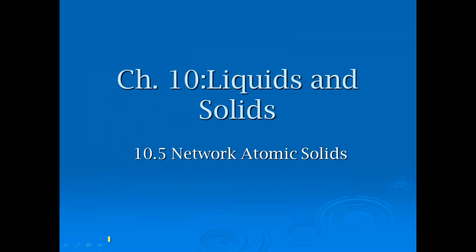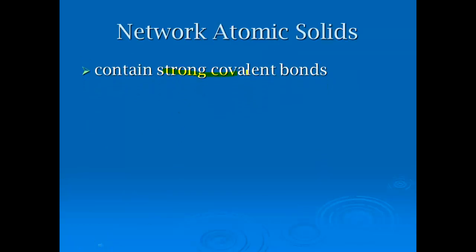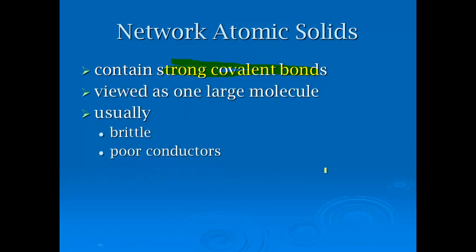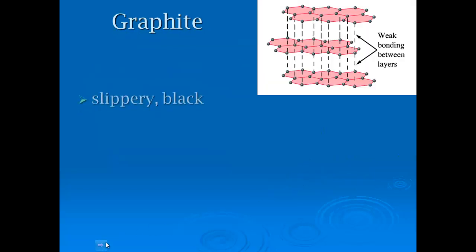Network atomic solids. I know these are kind of the toughest to understand because we've never really talked about them. They contain strong covalent bonds. As opposed to the molecular crystals where you have an intermolecular force, this is truly, and carbon has its own, but this is actually a very strong covalent bond. It's not an intermolecular force, so it makes these network atomic solids viewed as one large molecule. They're usually very brittle because they cannot slide past one another. They're also very poor conductors because they don't have roaming electrons. All the electrons are roped in.